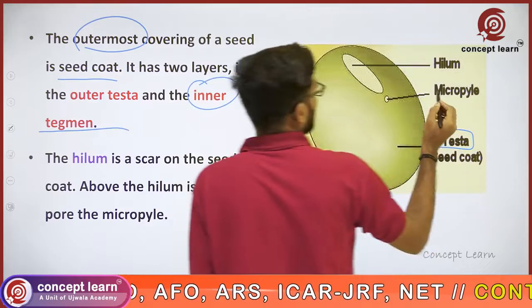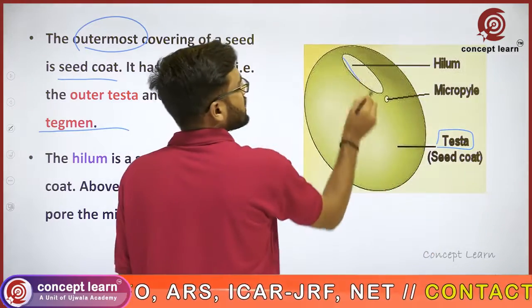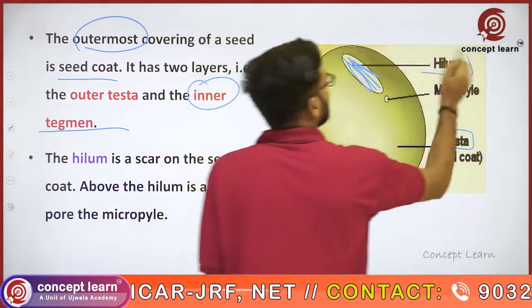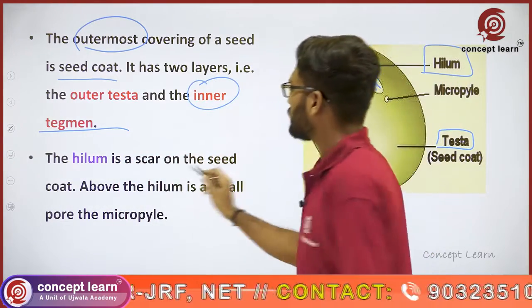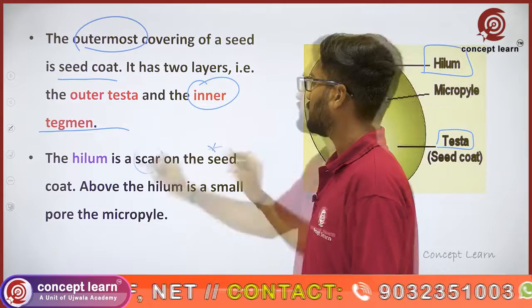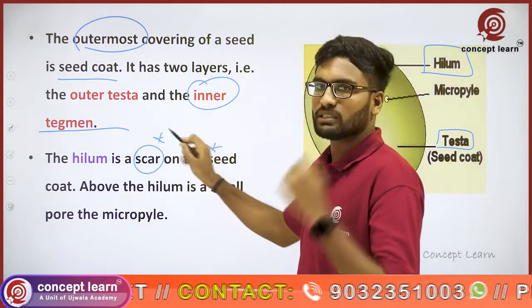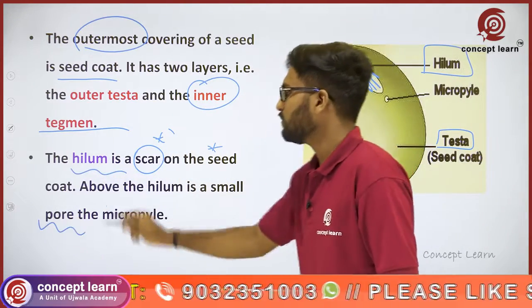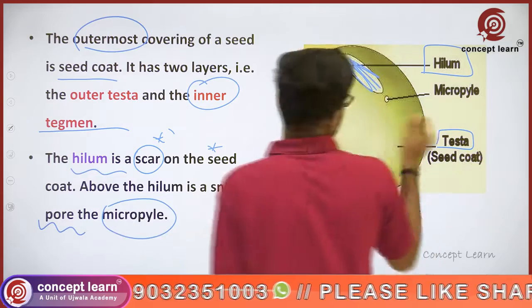There is a scar present on the seed. The scar is called hilum, and the pore present on the seed is called micropyle.